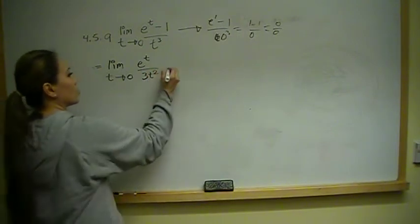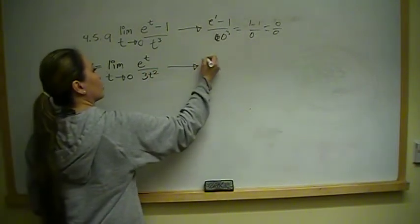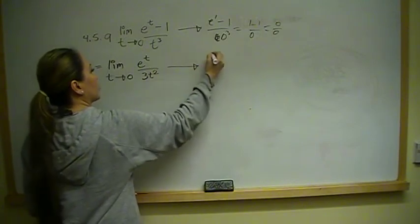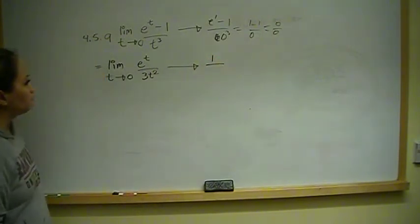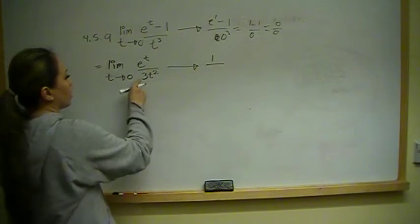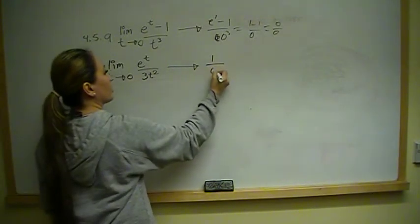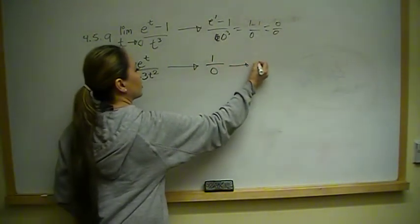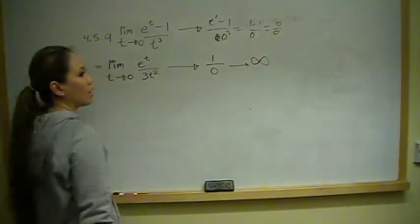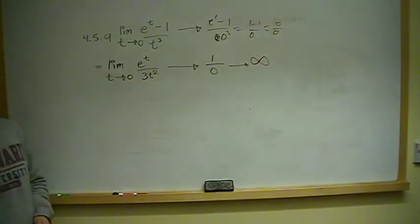So where does that leave us? Well, at 0, e to the 0 is 1, approaching the value of 1. And 3t squared is going to be 0. 1 over 0 is infinity. So that is the answer for that one.